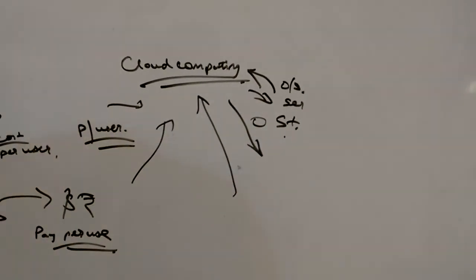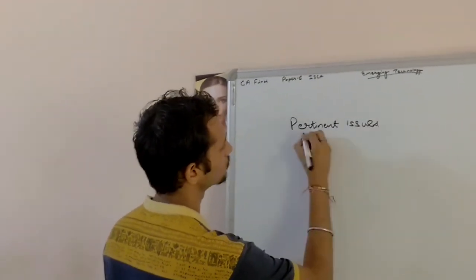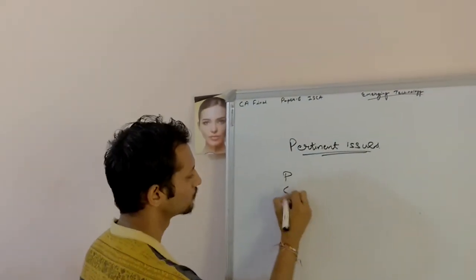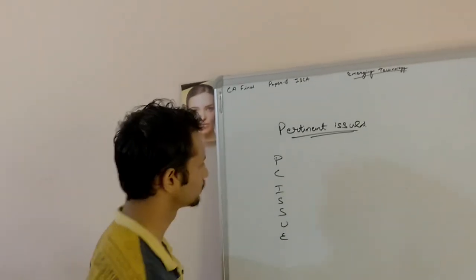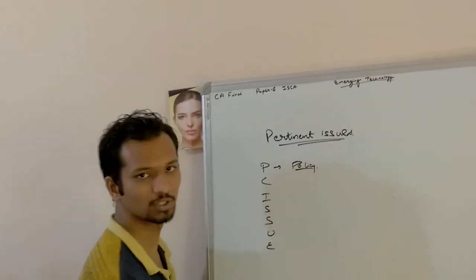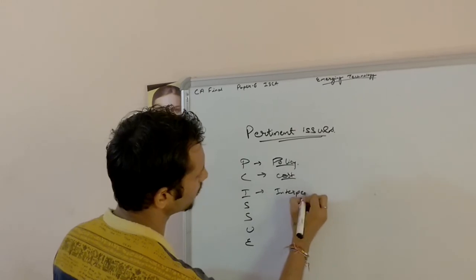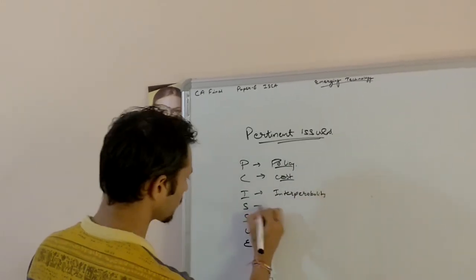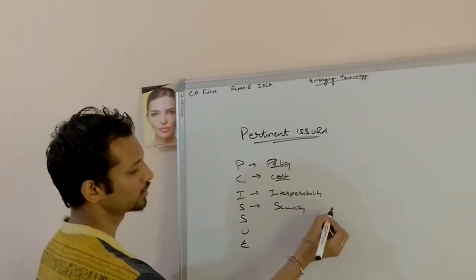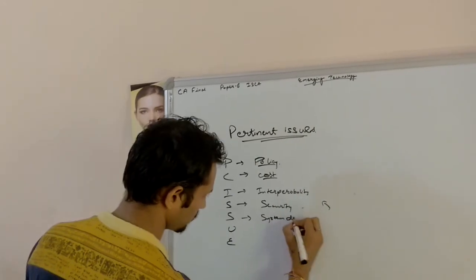What are issues, what are problems of cloud computing? I will call it P issues. P from P to result: policy, cost, interoperability, security issues, internet cloud, and specifically internet.